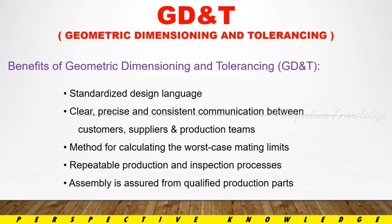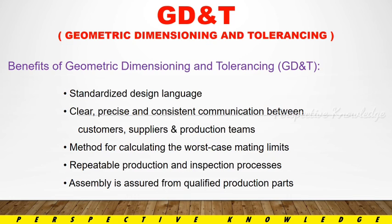The benefits of GD&T include a standardized design language that is clear, precise, and consistent for communication between customer, supplier, and production team. If there is miscommunication, GD&T resolves it. It provides a method for calculating worst-case mating limits, a repeatable inspection process, and ensures that assembly is assured from qualified production parts. GD&T is the main framework for automation.